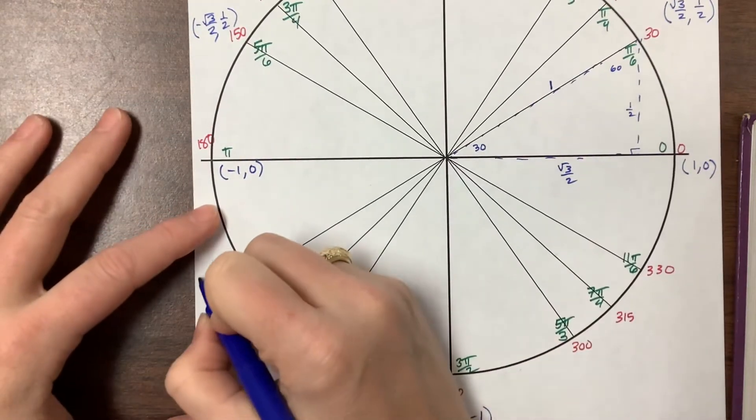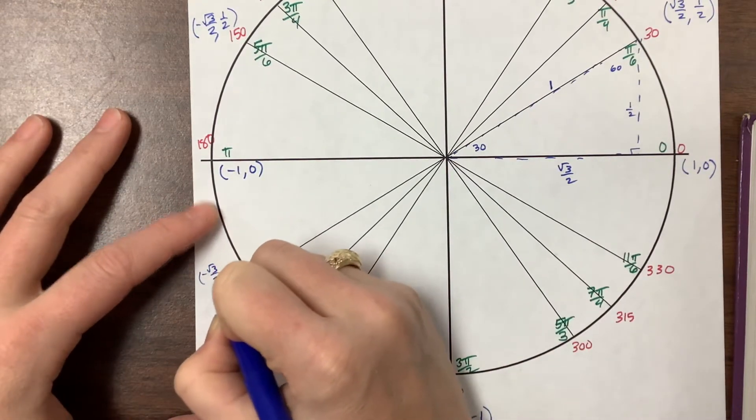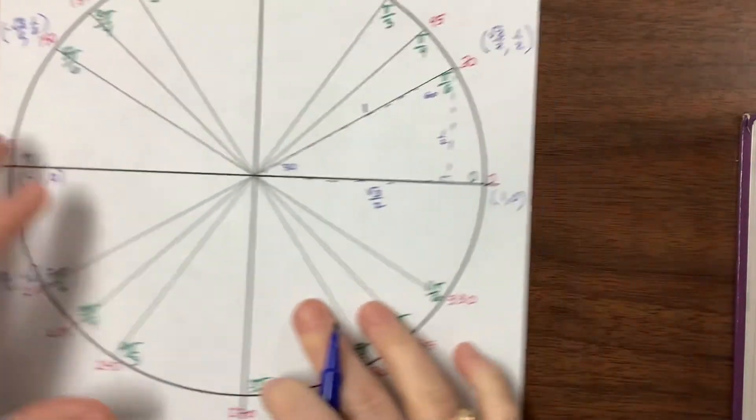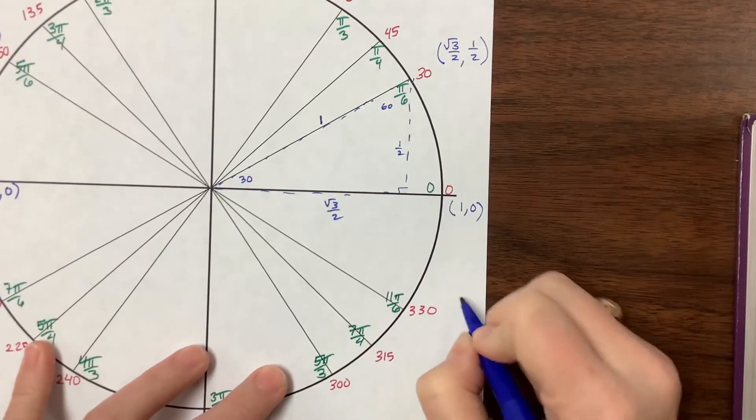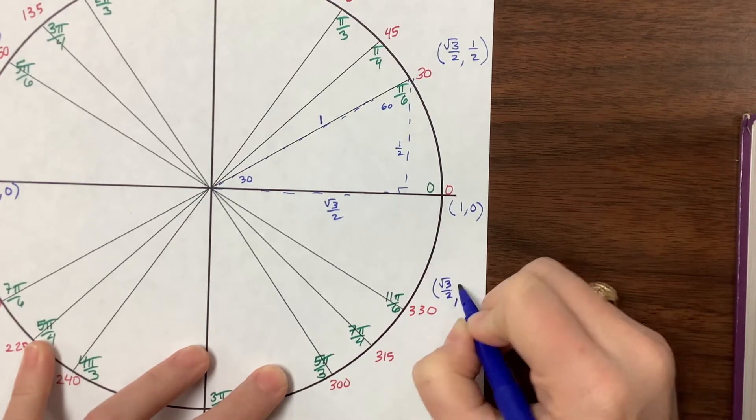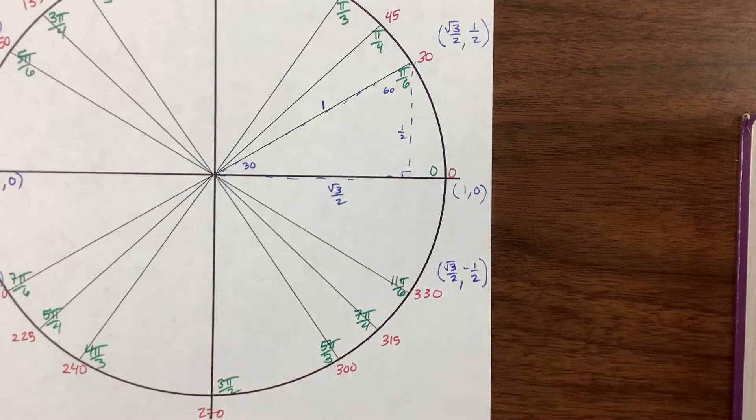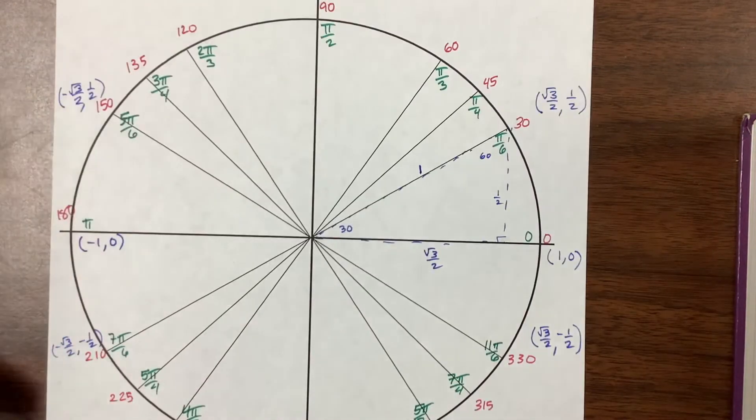In quadrant 3 we have -root 3 over 2 and -1/2. In quadrant 4, root 3 over 2 is positive and the 1/2 y value is negative. That's the first set of those values.